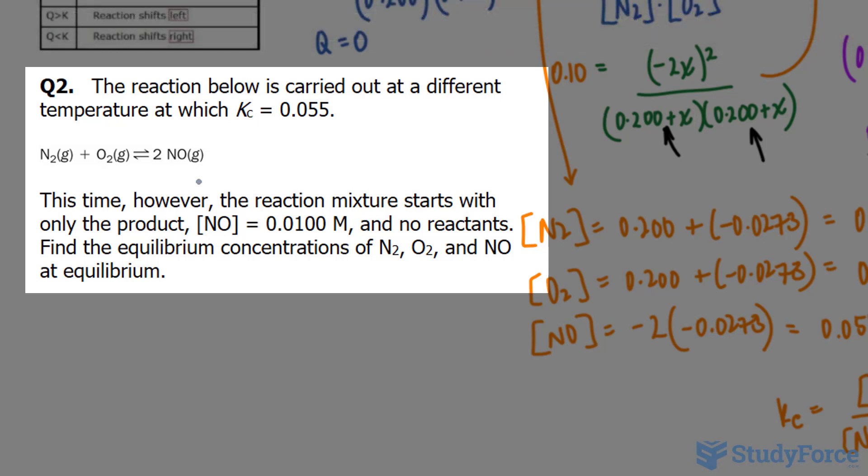The reaction is the exact same one we worked with in question number 1. This time, however, the reaction mixture starts with only the product, and the concentration of NO is given as 0.0100 molar, and no reactants. Find the equilibrium concentration of N2, O2, and NO at equilibrium.